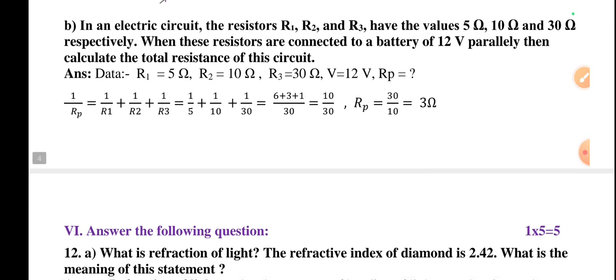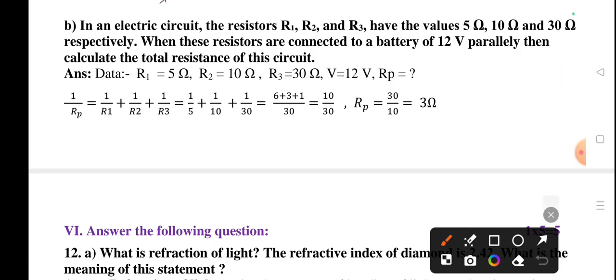Part B: In an electric circuit, the resistors R1, R2, and R3 have values of 5 ohm, 10 ohm, and 30 ohm respectively. When these resistors are connected to a battery of 12 volts in parallel, then calculate the total resistance of the circuit. R1 is 5 ohm, R2 is 10 ohm, R3 is 30 ohm. Potential difference is 12 volts. What we have to find out? Rp, the parallel resistance.